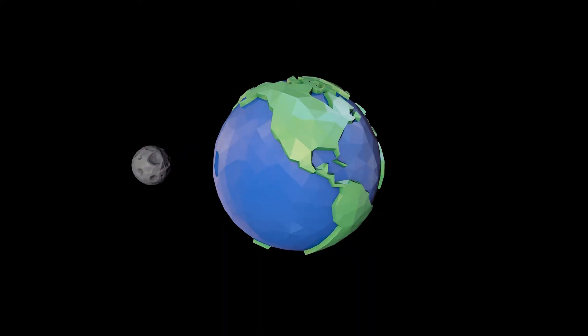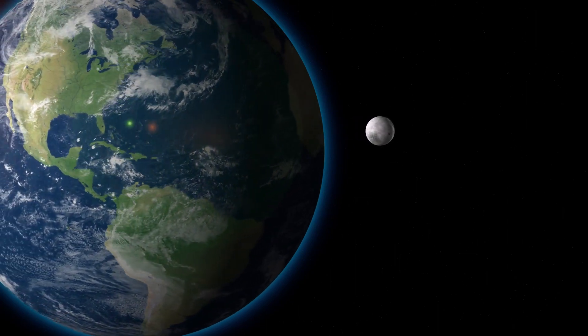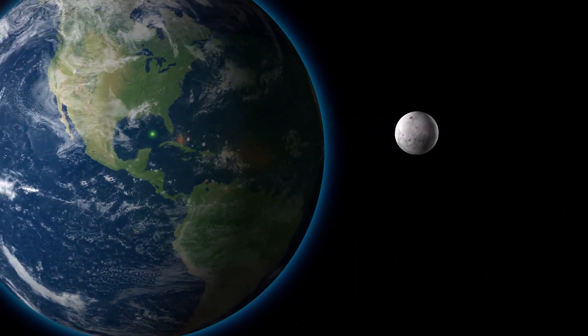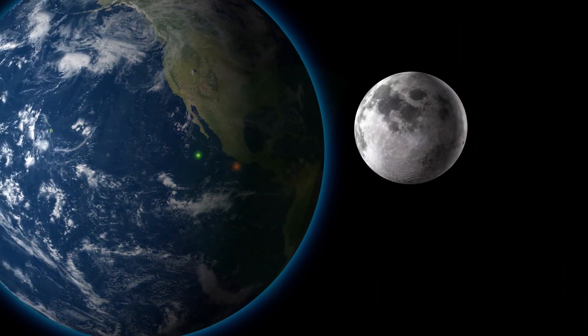Also, the Moon is traveling horizontally at a very fast speed, so as the Earth pulls it down, it keeps moving horizontally, which keeps it revolving around Earth in an orbit instead of making it fall down.